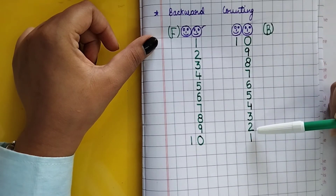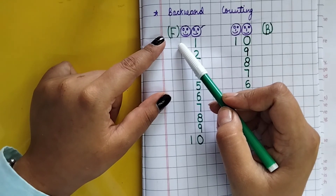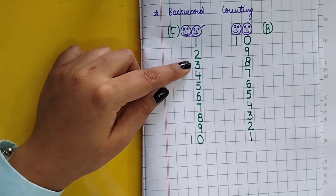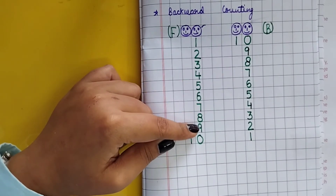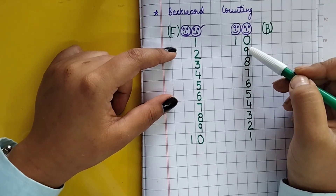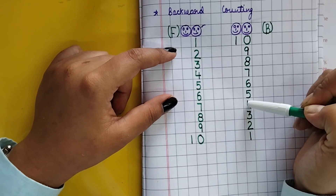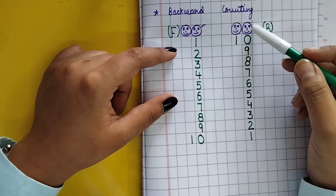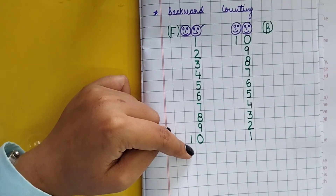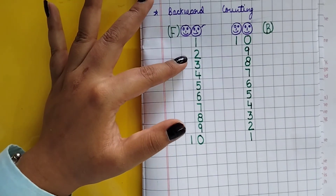This is the backward counting. Can you see the difference? Forward counting is one, two, three, four, five, six, seven, eight, nine, ten — you go straight forward. And in backward counting you go ten, nine, eight, seven, six, five, four, three, two, one. One to ten is forward and ten to one is backward. I hope students you have understood this. Learn this and see the difference between forward and backward counting.